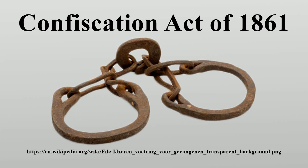In response to this situation, General David Hunter, the Union Army military commander of Georgia, South Carolina, and Florida, issued General Order No. 11 on May 9, 1862, freeing all slaves in areas under his command. Upon hearing of Hunter's action one week later, Lincoln immediately countermanded the order, thus returning the slaves to their former status as property in the care of the federal government.